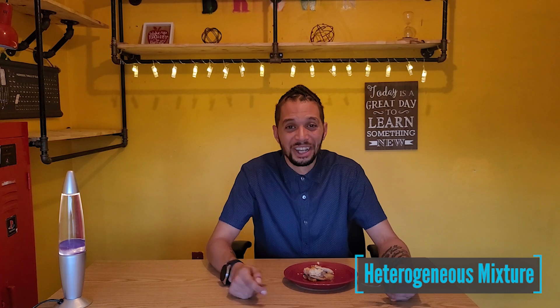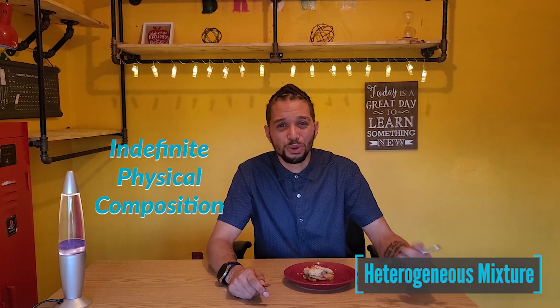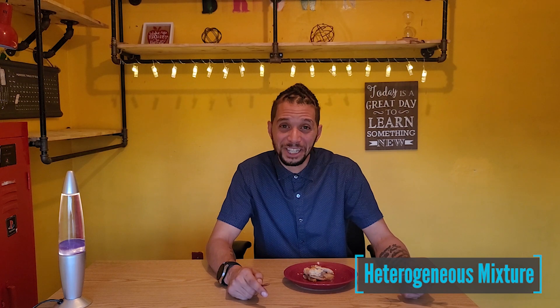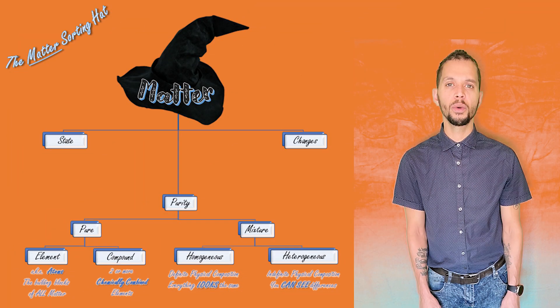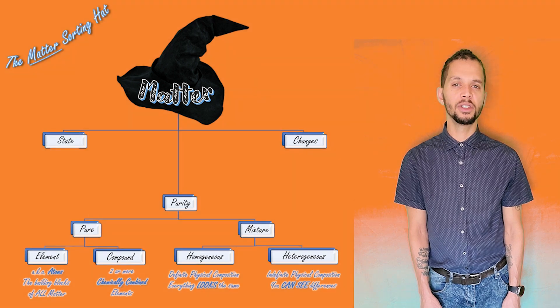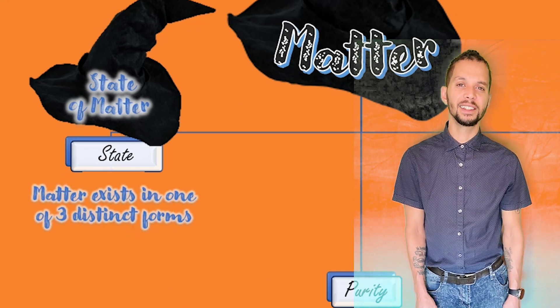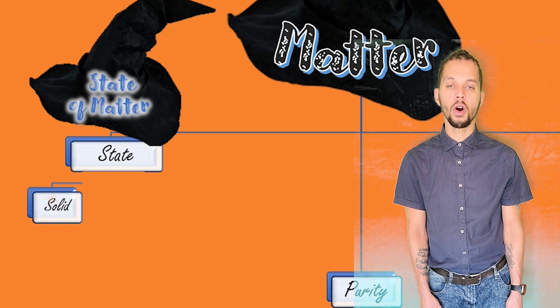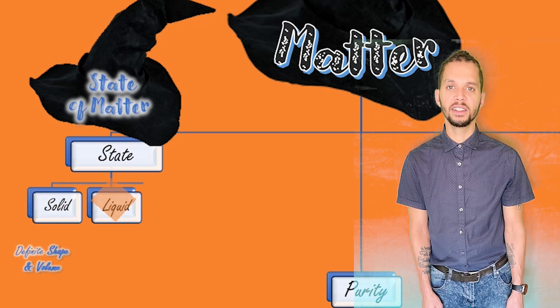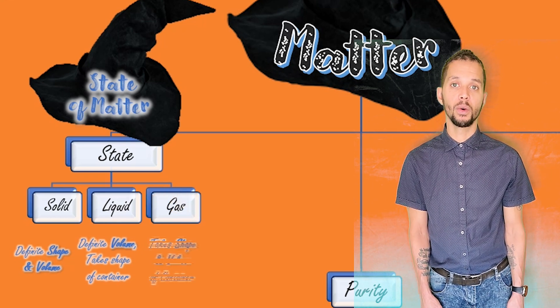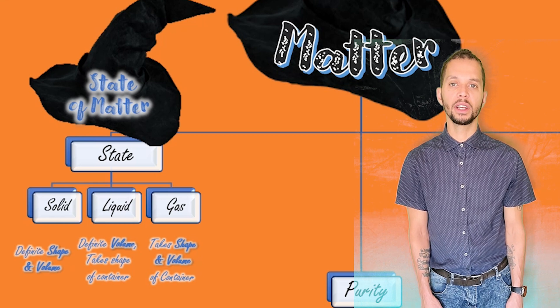An absolutely lovely and downright delicious example of a heterogeneous mixture is this apple pie right here. Looking at the apple pie, I can easily see the differences between the ingredients that are mixed together in it — well, at least before I eat it, you can. Going back to our three main sorting classes, substances are sorted based on how pure they are, but they are also sorted based on the state of matter that they exist in. All the matter that you see in the world exists in the state of either a solid, liquid, or a gas. Let's now take a look at how matter is sorted based on the state that it exists in.